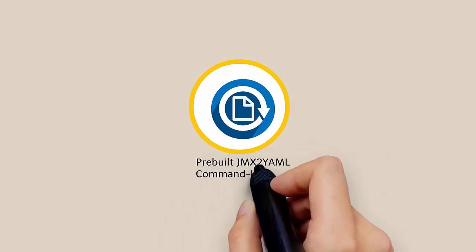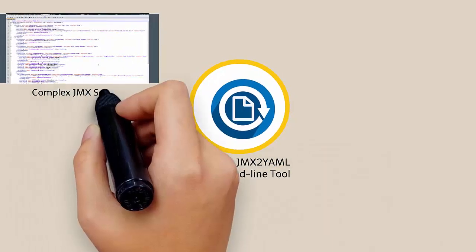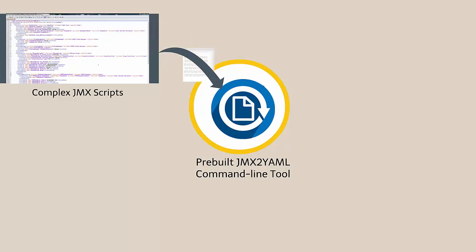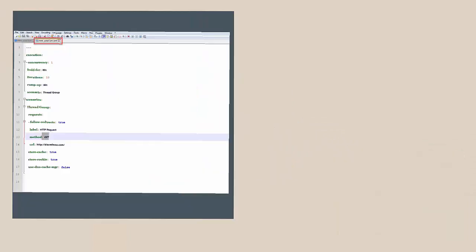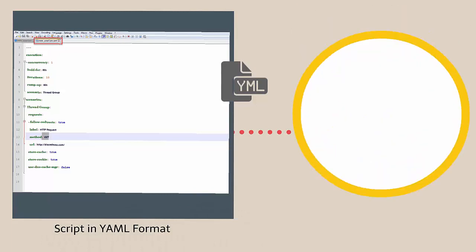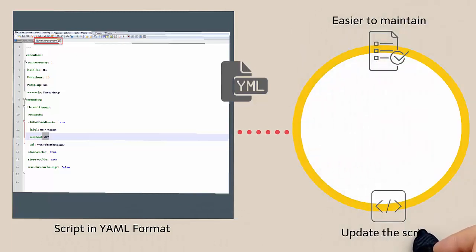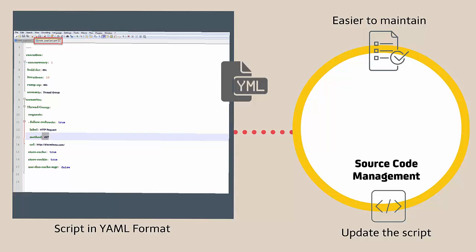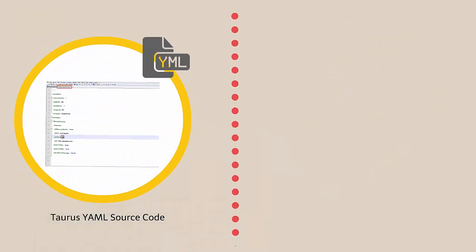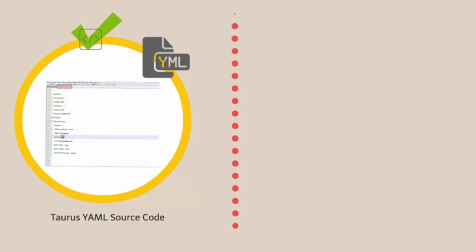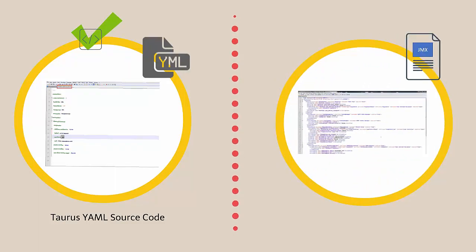The pre-built jmx2yaml command-line tool lets you convert your complex JMX scripts to easily readable YAML scripts. Once the script is in YAML format, it is much easier to maintain and update the script under a source code management tool like GitHub. This is because the Taurus YAML source code representation is much friendlier than the JMeter XML source code representation.